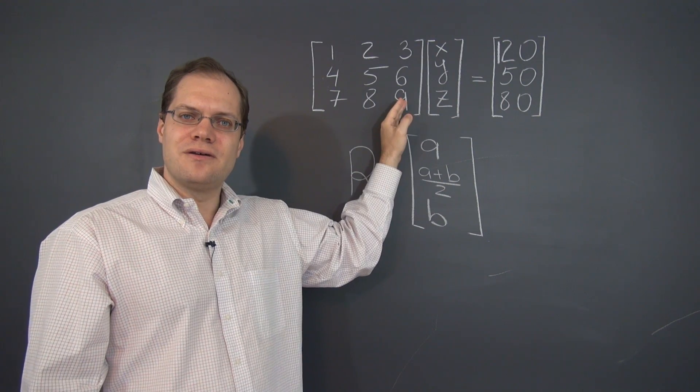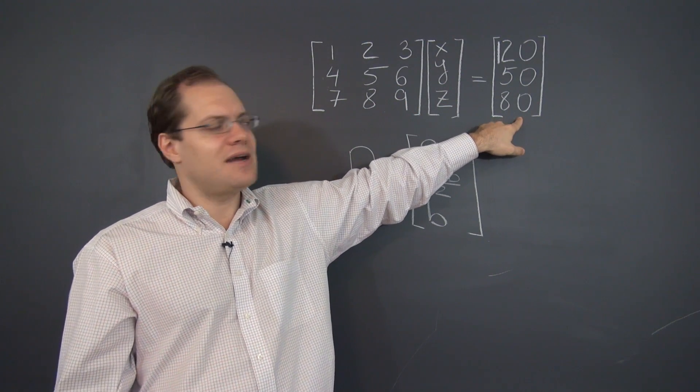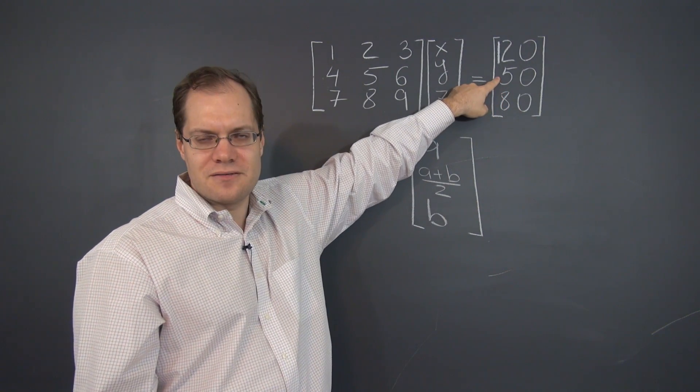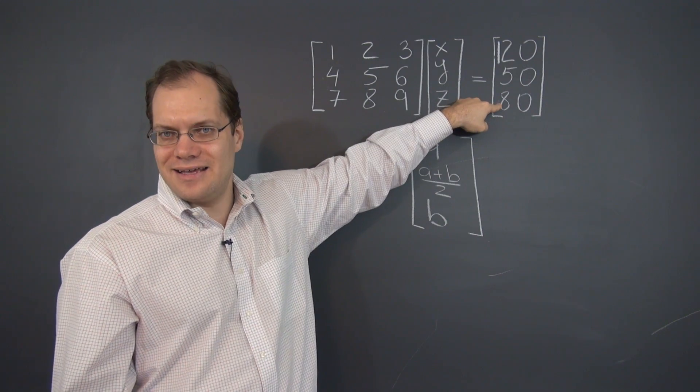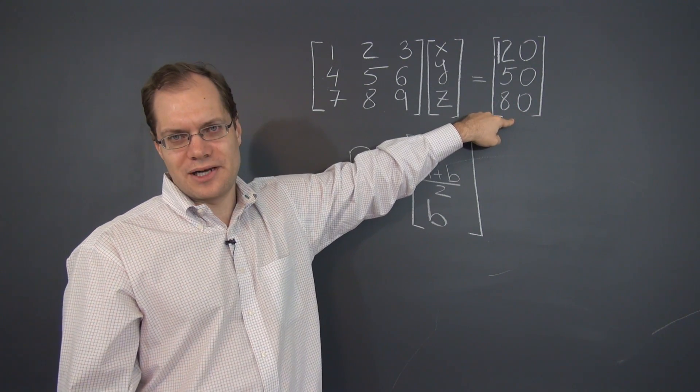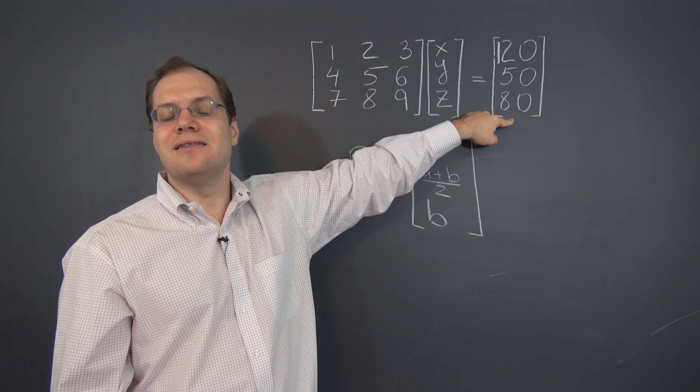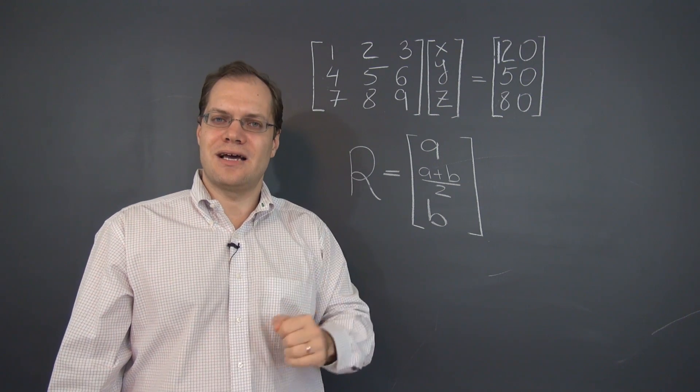Meanwhile, the column on the right-hand side does not have that property because 50 is not the average of 120 and 80. So it is not possible to obtain the right-hand side as a linear combination of the columns. Therefore, the system doesn't have a solution.